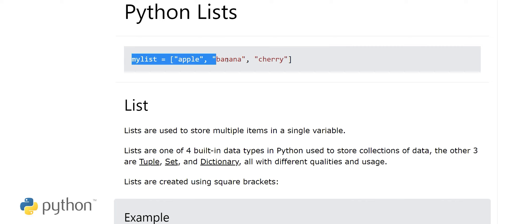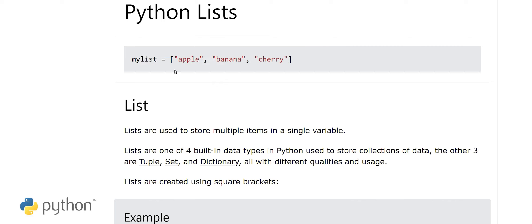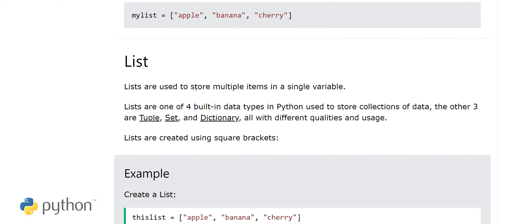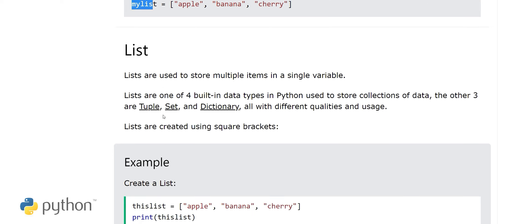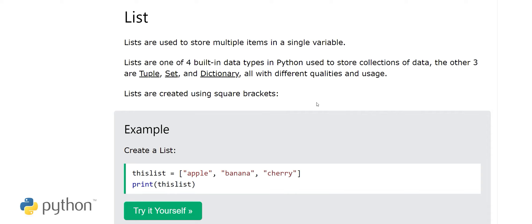Here on screen you can see the definition of a list. A list is a collection of items and it is under two square brackets. Lists are used to store multiple items in a single variable. For example, 'my list' is a variable storing multiple values like apple, banana, and cherry. Lists are one of the four built-in data types in Python used to store collections of data.